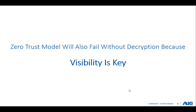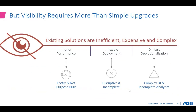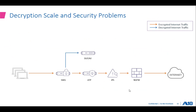The zero trust model will also fail without decryption because visibility is the key. Existing solutions are not enough — even if you implement a firewall as a decryption device, according to NSS Labs, a next-generation firewall typically experiences up to 90 percent performance degradation with decryption. That means if your firewall does 80 Gbps throughput pre-decryption, you would need 10 firewalls to match the original promised performance of 8 Gbps throughput, assuming no load balancers are used.